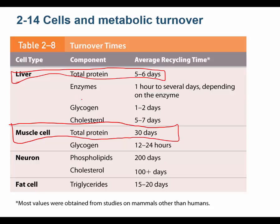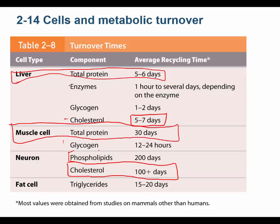Let's look at cholesterol turnover. Cholesterol in the liver lasts about a week. But in a neuron, that cholesterol lasts over 100 days — a very long time. In a fat cell, cholesterol turnover depends on your metabolic state: if you're running marathons, lipids in fat cells turn over very quickly; if not, they turn over slowly. The phospholipids in a neuron last almost a year — they're very stable — whereas phospholipids in other cells turn over much more frequently, partly because neurons are insulated with myelin.